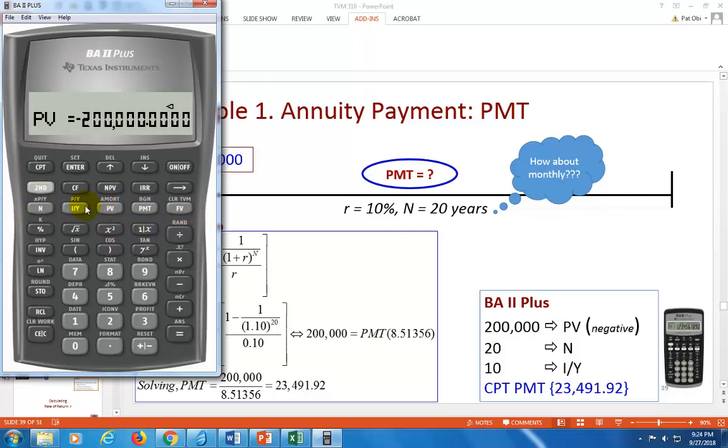Otherwise, when cash flows are different from one year to another, we stay on the second row, in which case we're going to use CF, the cash flow register. Anyhow, continuing,